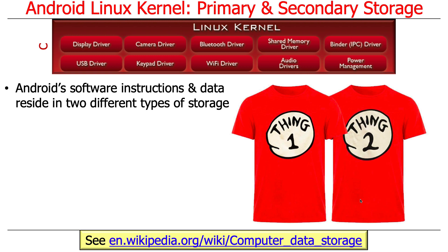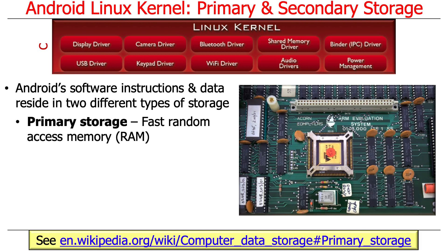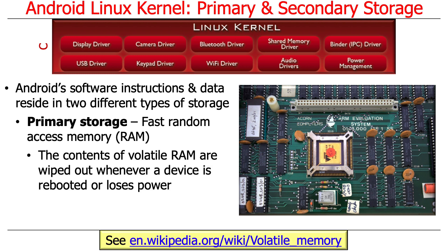In Android, as in pretty much any system, the software instructions and data can reside in two different types of storage. One type is what we typically call primary storage or random access memory, which is fast and very efficient. But the downside is the second your phone gets turned off or you run out of power, any contents in RAM disappear because it's so-called volatile memory.